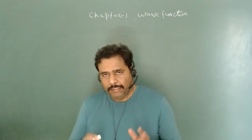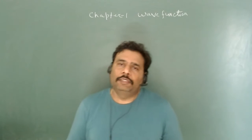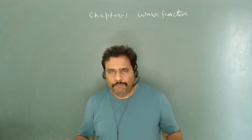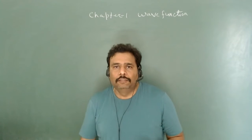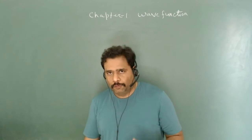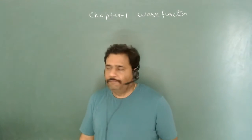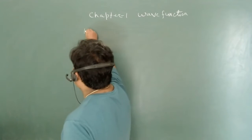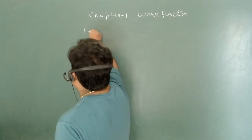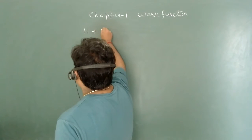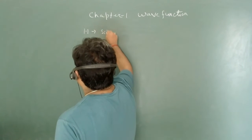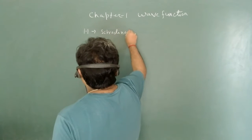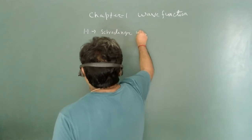Hello students. In the first chapter of Griffith, it is named as wave function. The first section, 1.1, is all about the Schrödinger wave equation.